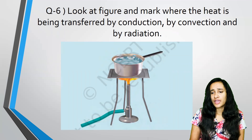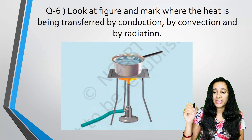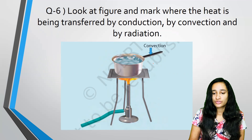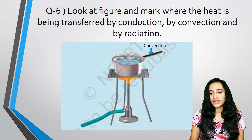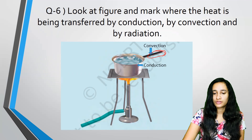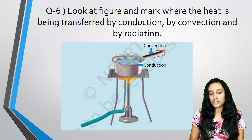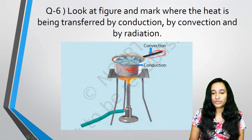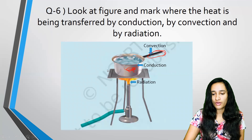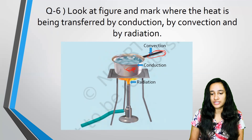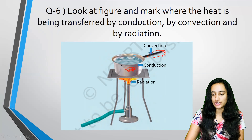Look at the figure and mark where the heat is being transferred by conduction, convection, and radiation. The handle transfers heat by conduction because it is steel. And then the heat going outward from the flame is through radiation.